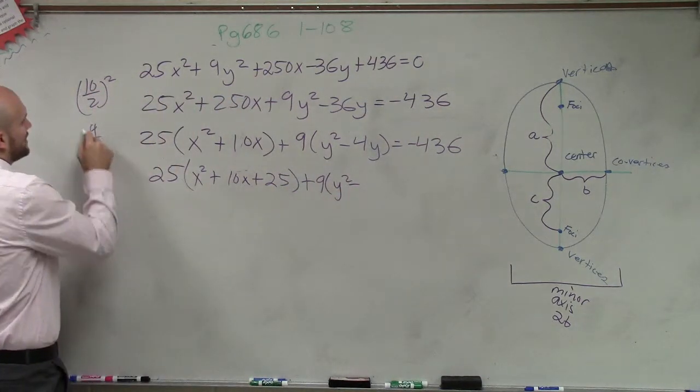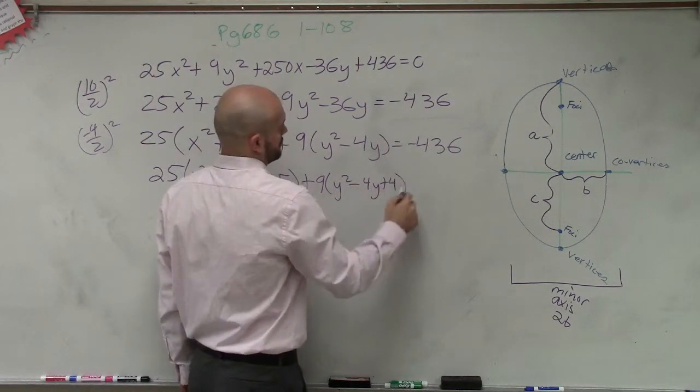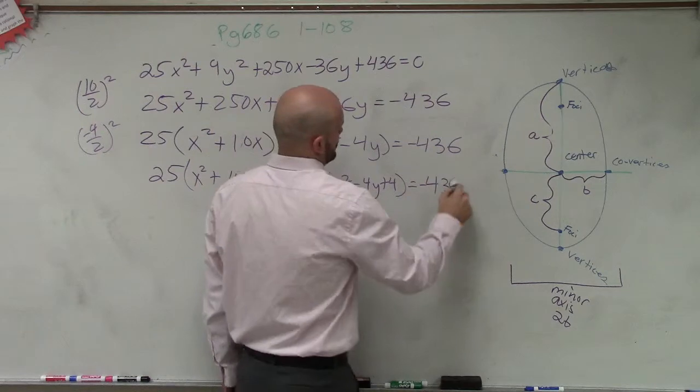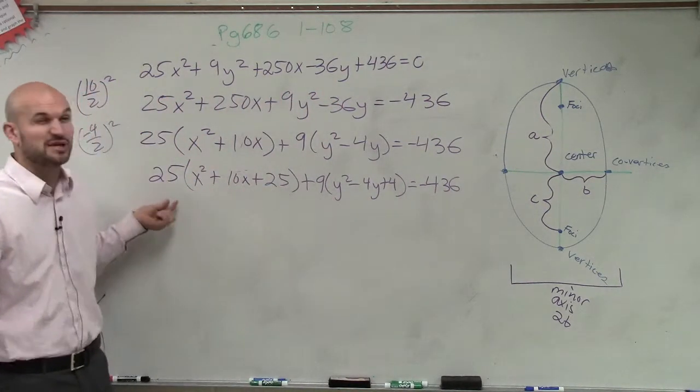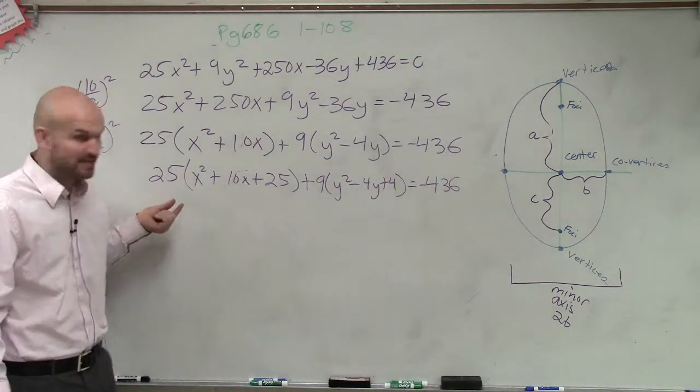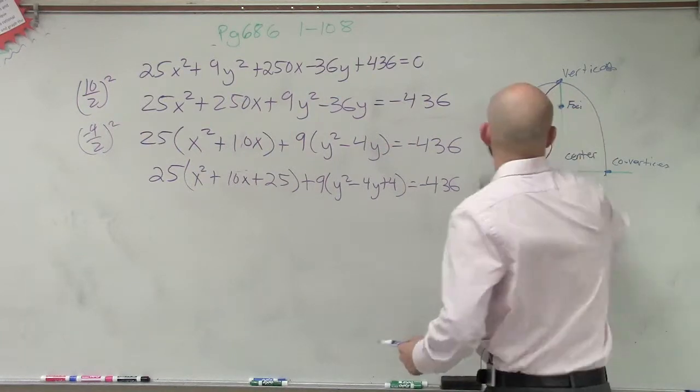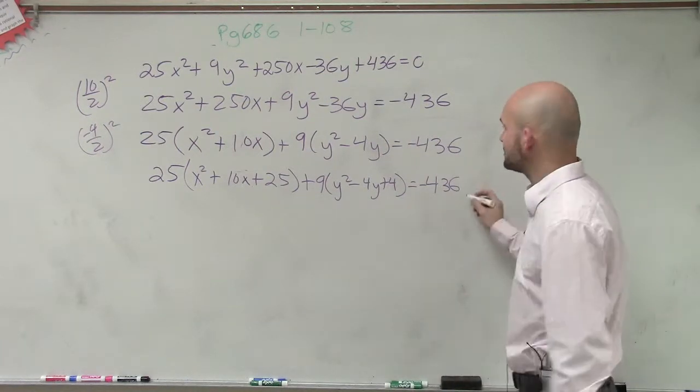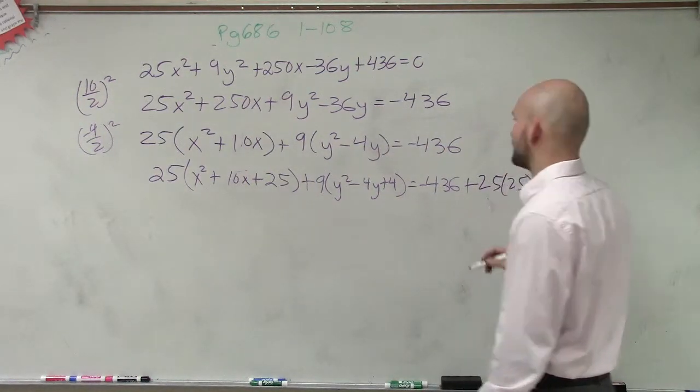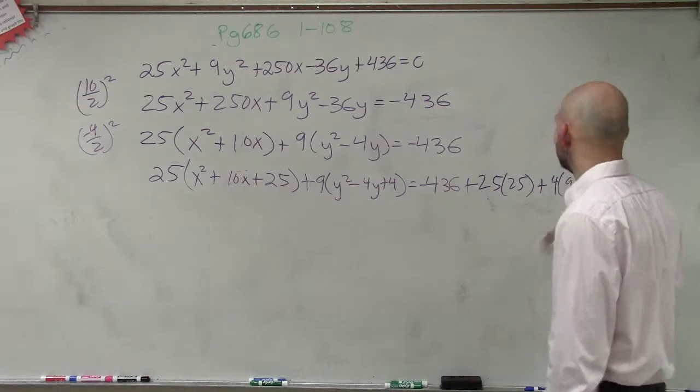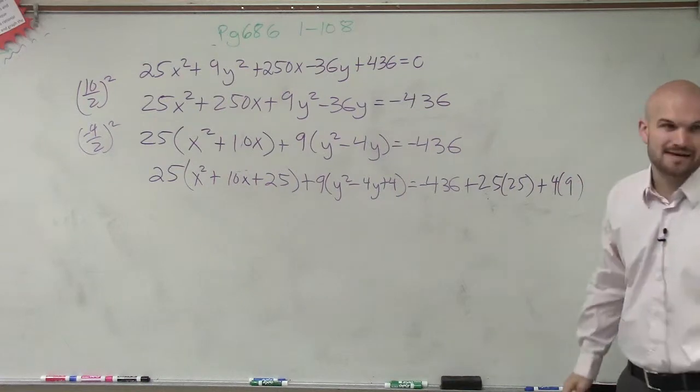Then over here, I have 9 times y squared minus, and then I'll just do negative 4 divided by 2 squared, which equals 4. And then remember, ladies and gentlemen, since I'm adding 25 to this side, but that 25 is really being multiplied by 25. So I have minus 436 plus 25 times 25, and then plus 4 times 9. So I have negative 436 plus 25 times 25 plus 4 times 9. And when you get that, I believe 25 times 25 is 625, 4 times 9 is 36. Add them all up, I believe you get 225.